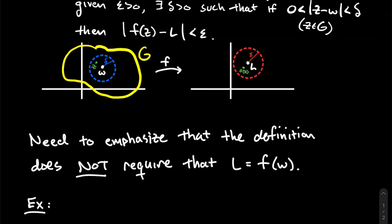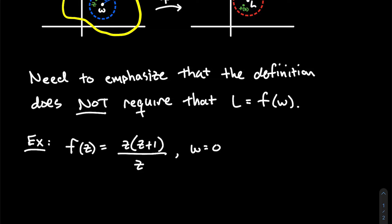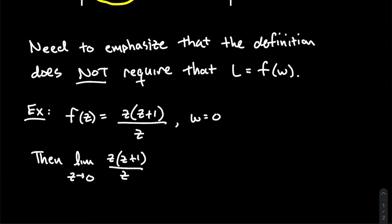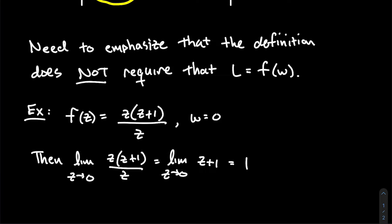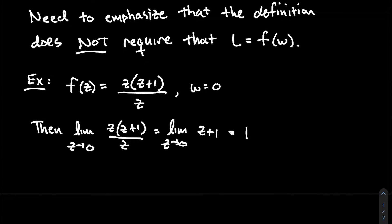If I take any point inside that blue disk Z, its output F(Z) should be inside the red disk. I'm not requiring L to be the output of the function at W. For example, if F(Z) = Z(Z+1)/Z and W = 0, the limit as Z approaches zero equals the limit of Z+1, which gives one. But F(0) is not one — it's undefined. So the limit L exists but it's not the output of the function at the point of interest.